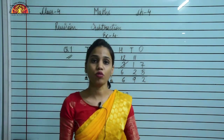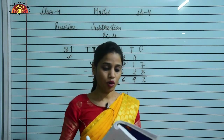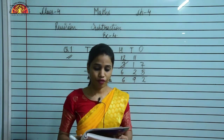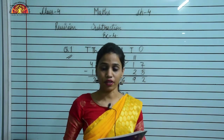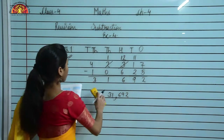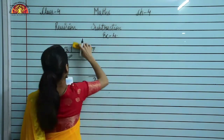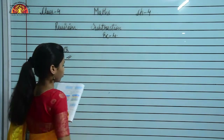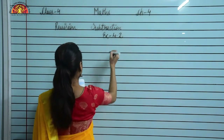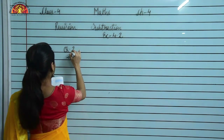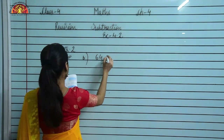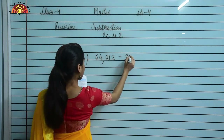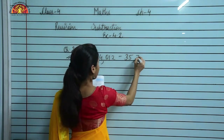This is how you have to do the subtraction. Now let us do question number 2: find the following differences. In question number 2, part B, the problem is 64,012 minus 35,794.